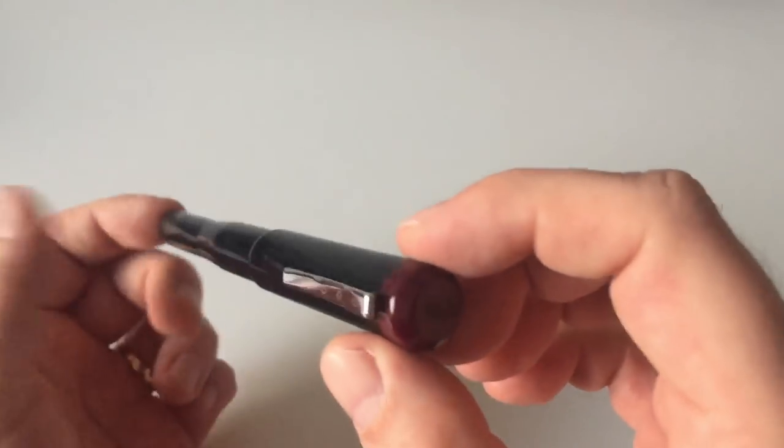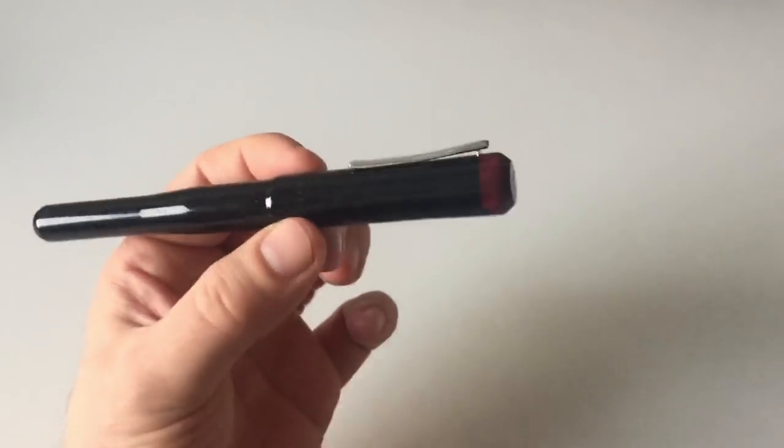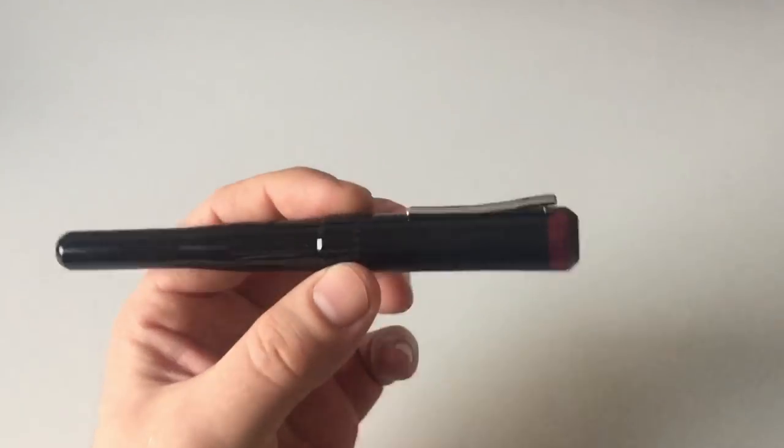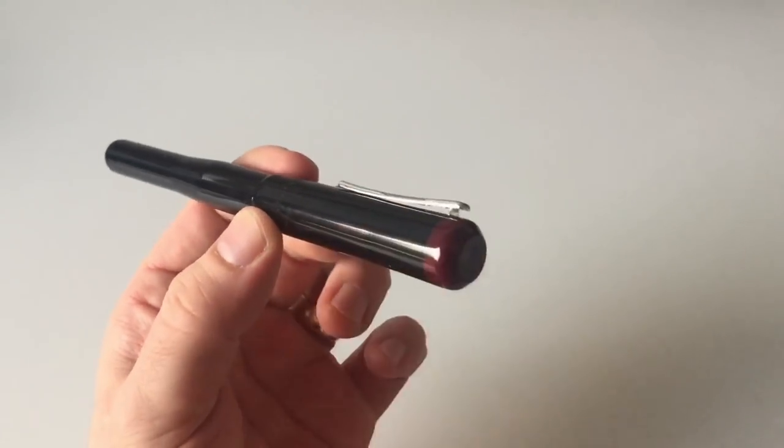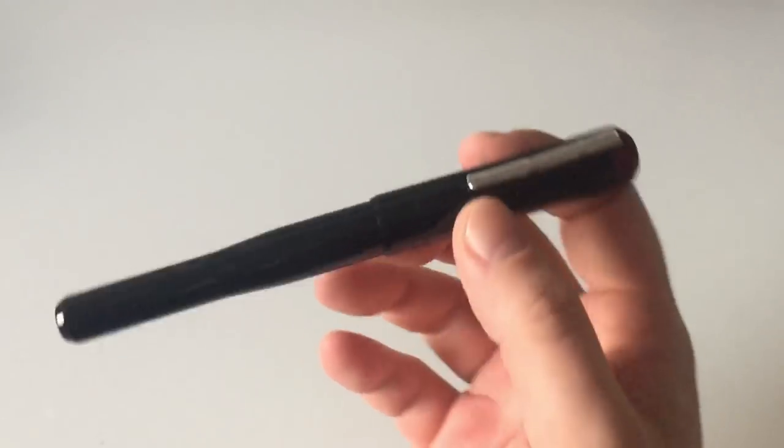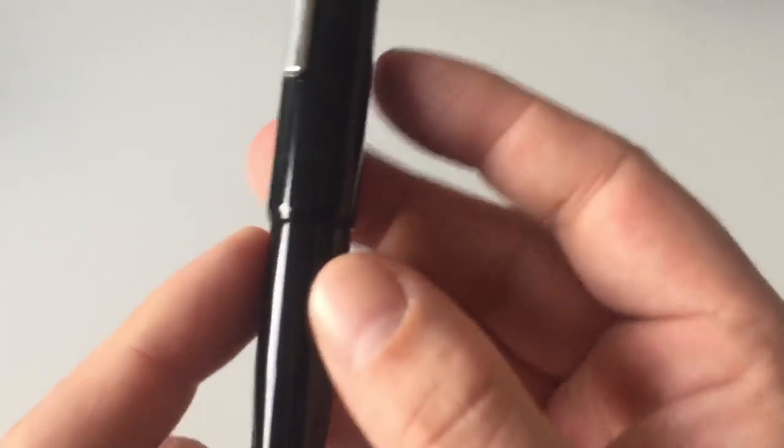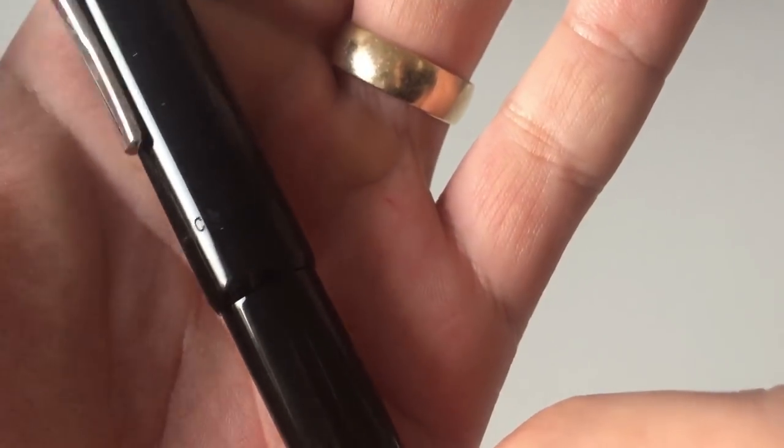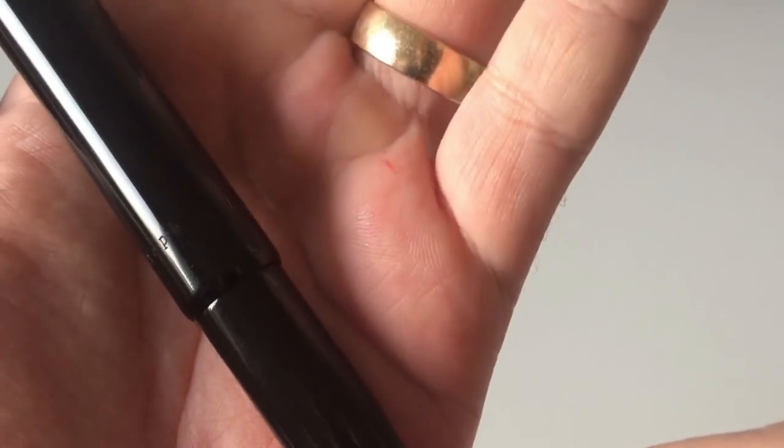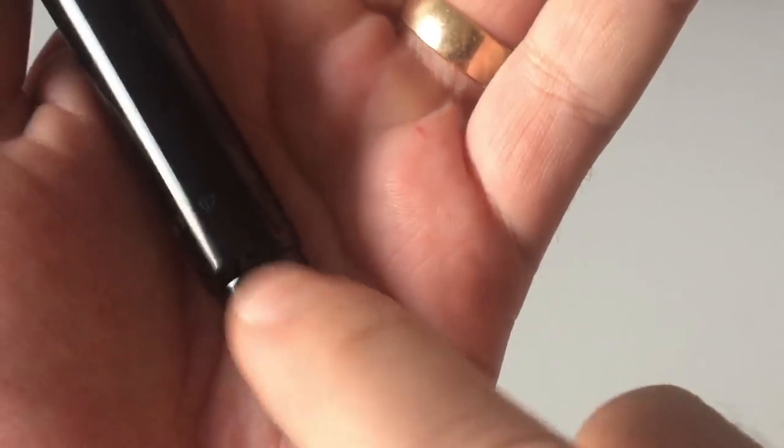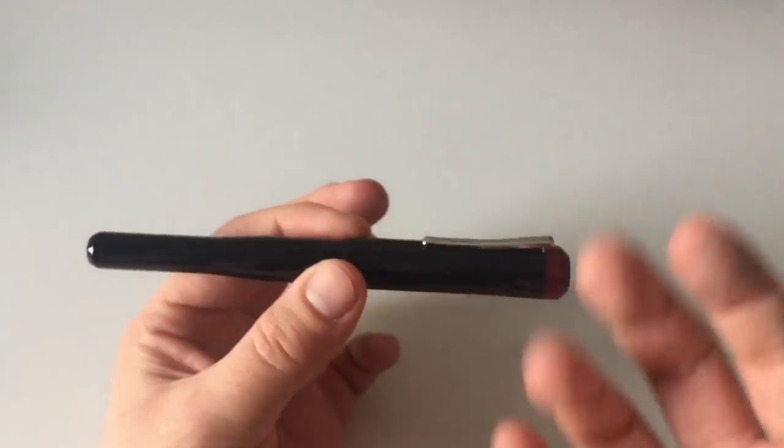So the shape of the pen. Franklin Christoph does produce a number of different pens. The one we're looking at here is called the Model 2, and it says that here on the pen: Franklin Christoph 02, here. That is the Model 2 Intrinsic.